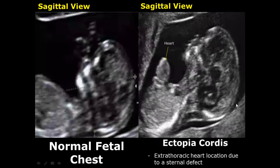Ectopia cordis refers to the extra-thoracic location of the heart. The heart will be outside the thoracic cavity because of a sternal defect. Here you can see in this sagittal view, the heart is located outside the chest.